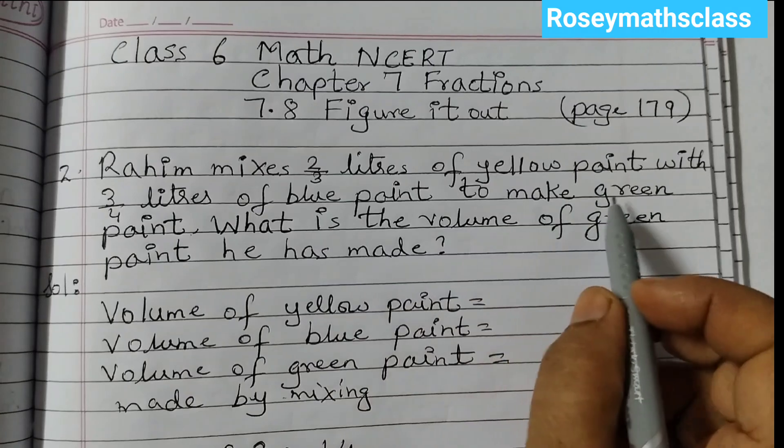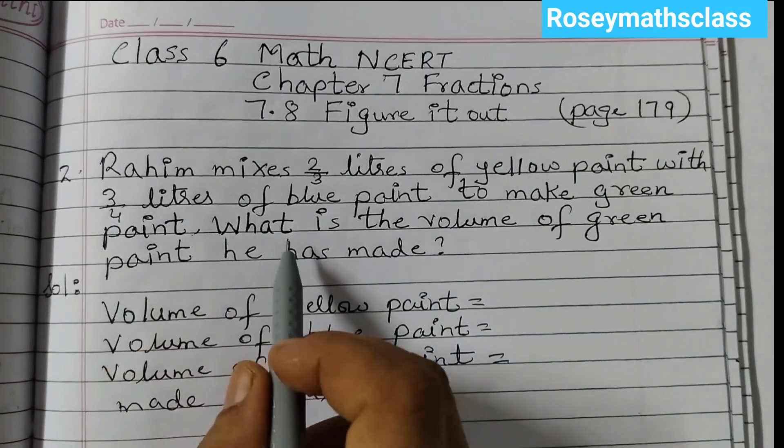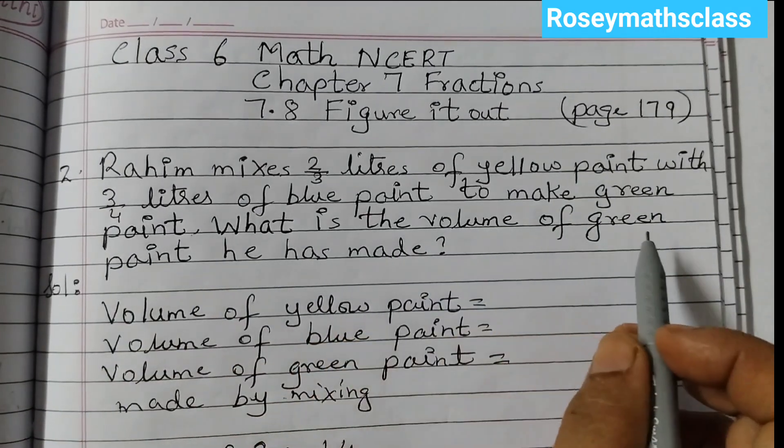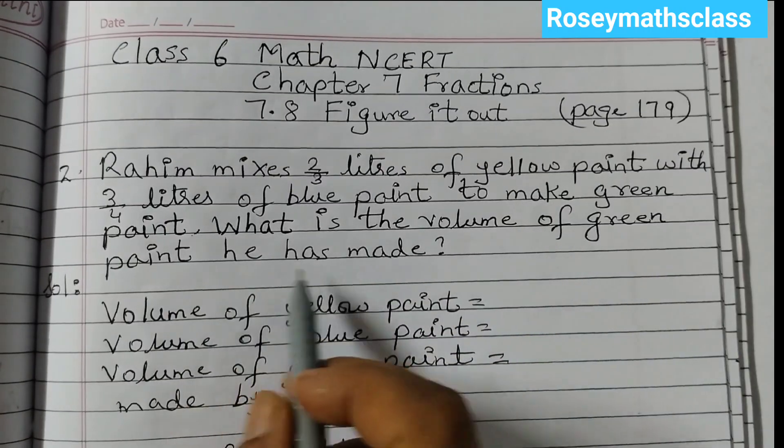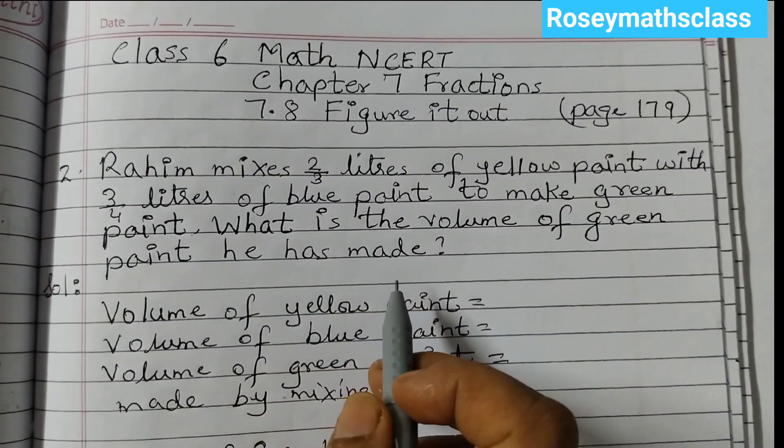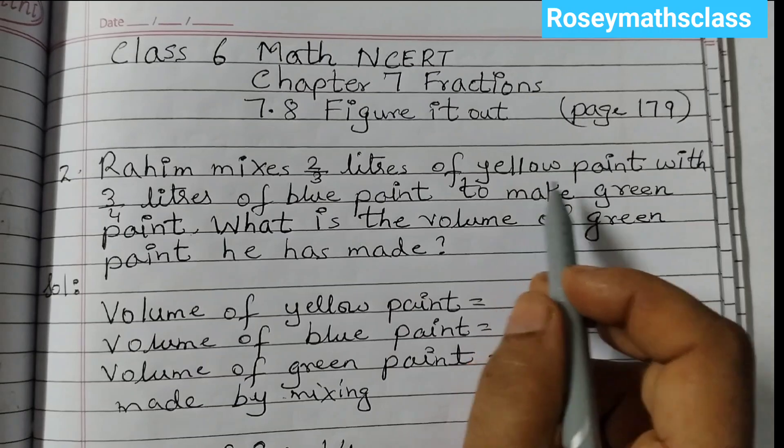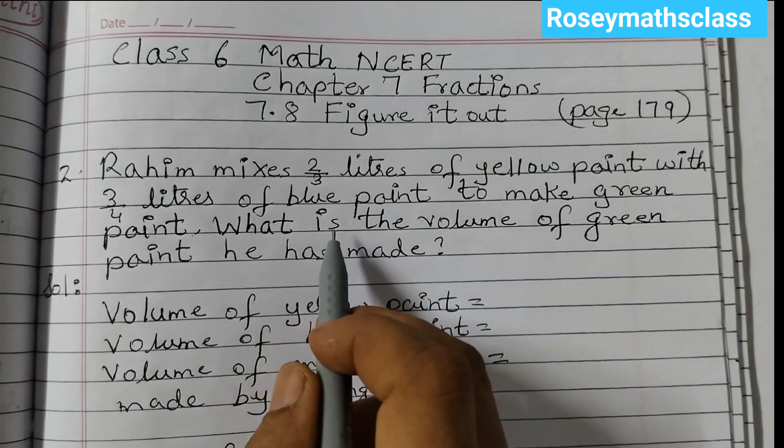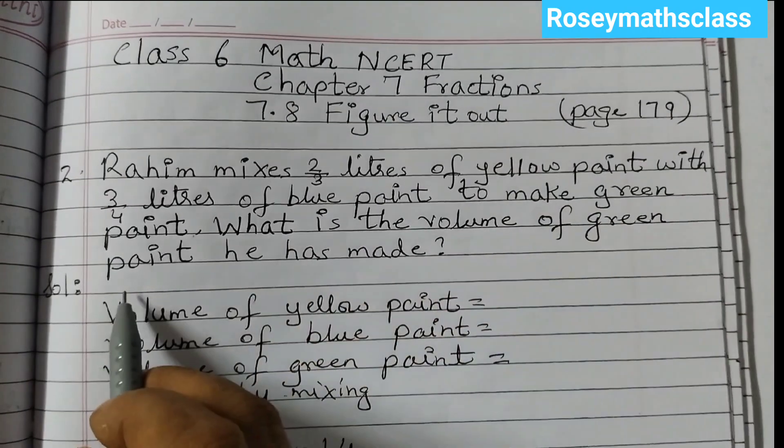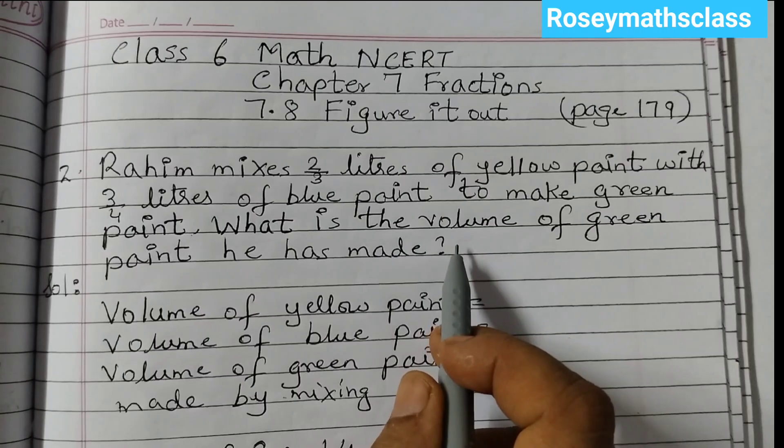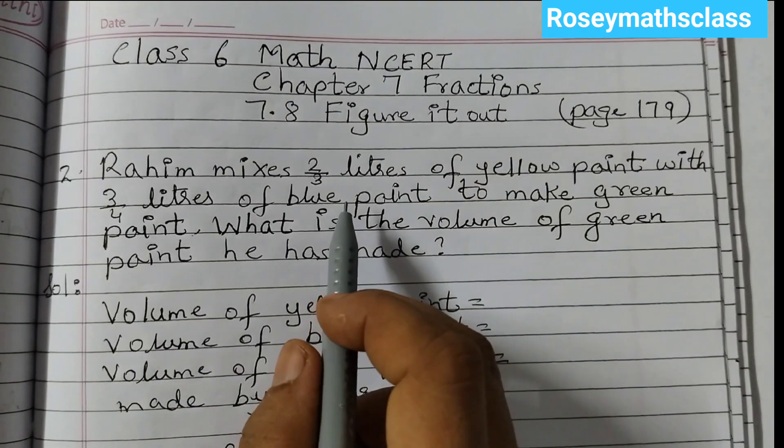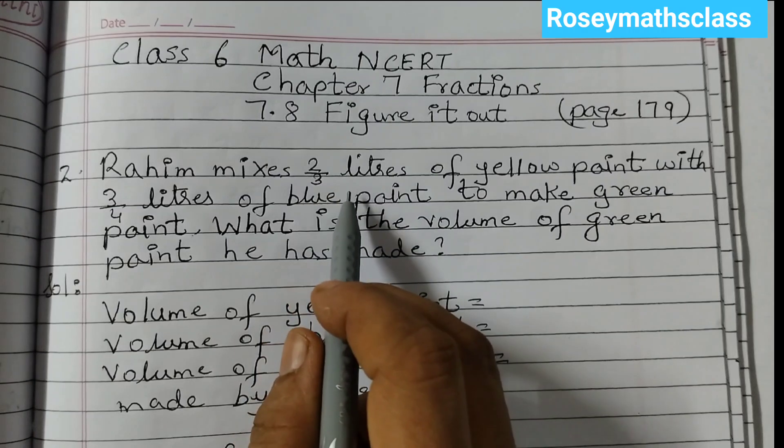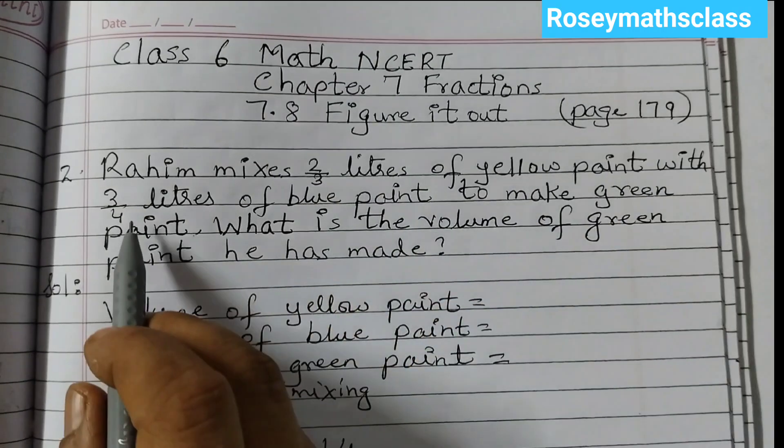Raheem mixes 2/3 liters of yellow paint with 3/4 liters of blue paint to make green paint. What is the volume of green paint he has made? We just saw that when we add yellow paint with blue paint, we get green paint. To find the total volume of green paint, we need to add the volumes of these two paints: 2/3 liters of yellow paint and 3/4 liters of blue paint.